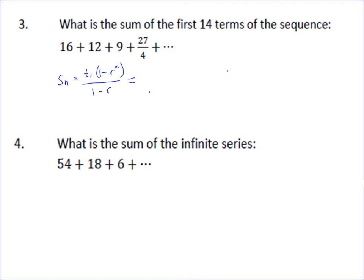So in this case, t_1 is going to be 16. Your ratio, now your ratio is not always easy to figure out. So we've got 16 here. And then 1 minus our ratio, well, you just do 12 over 16 to find the ratio.